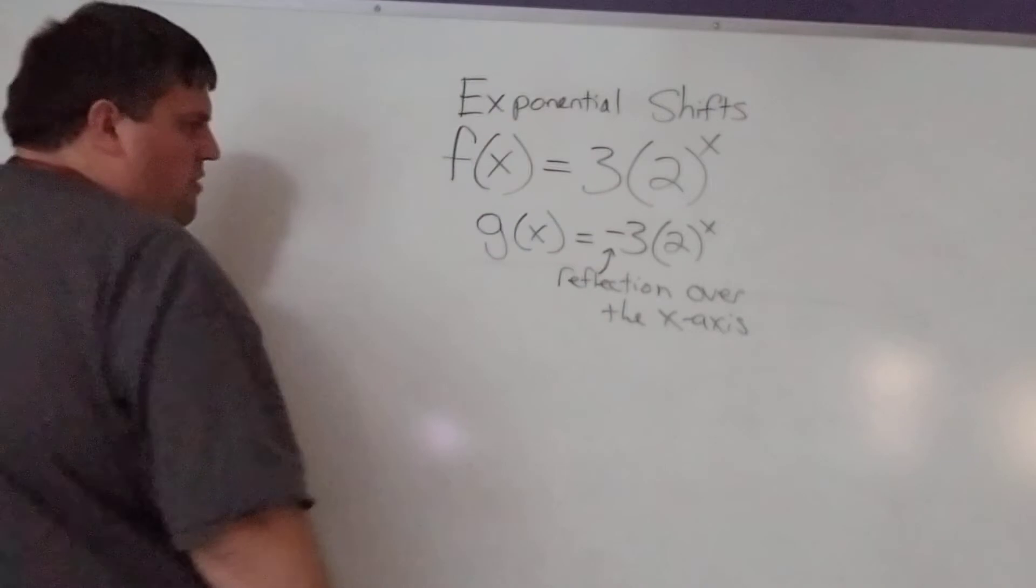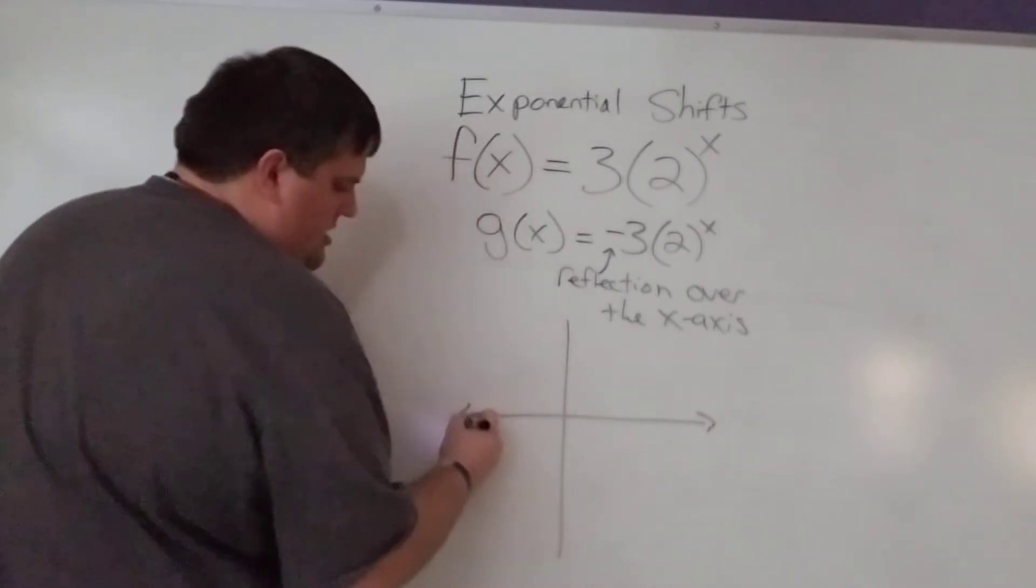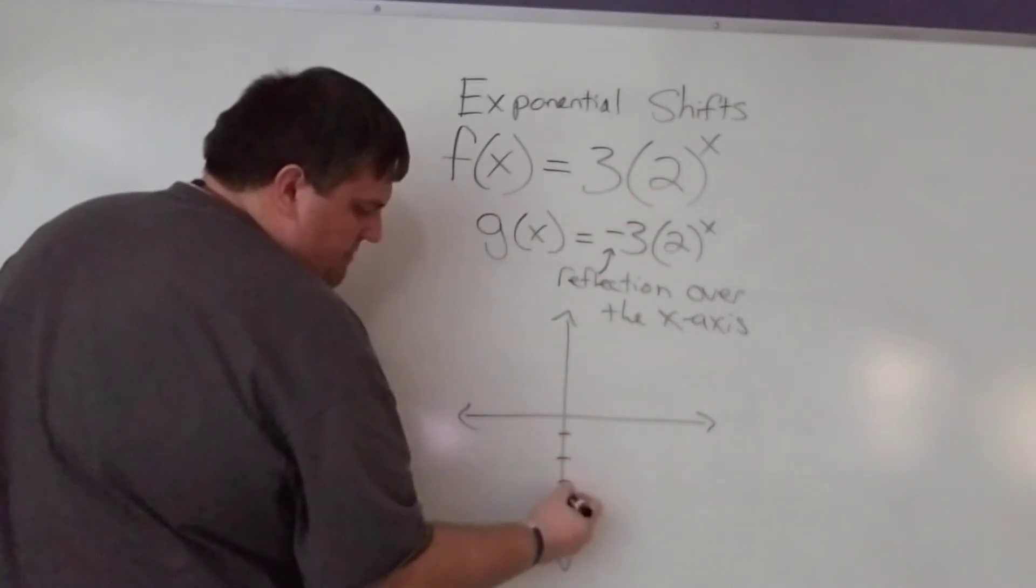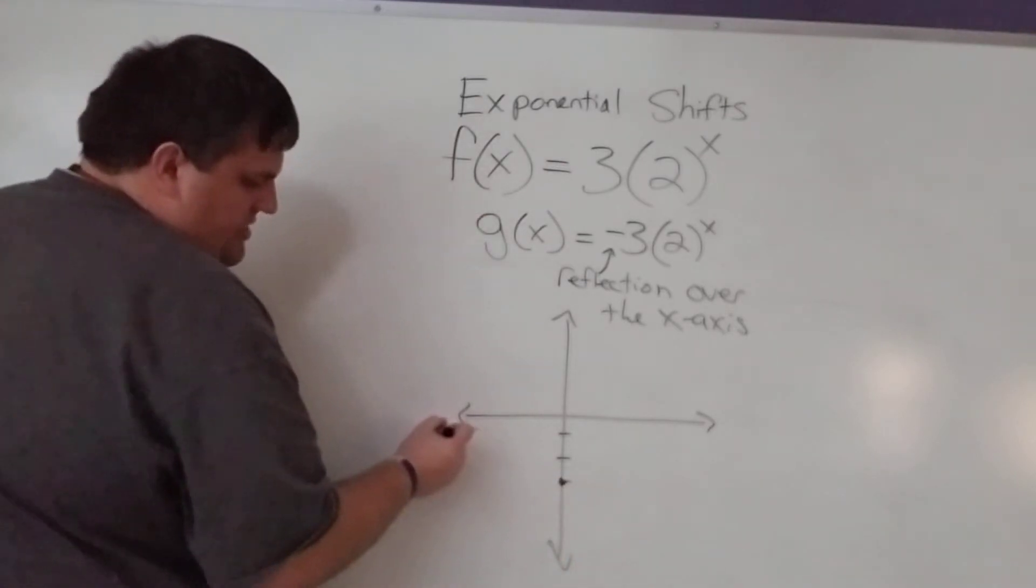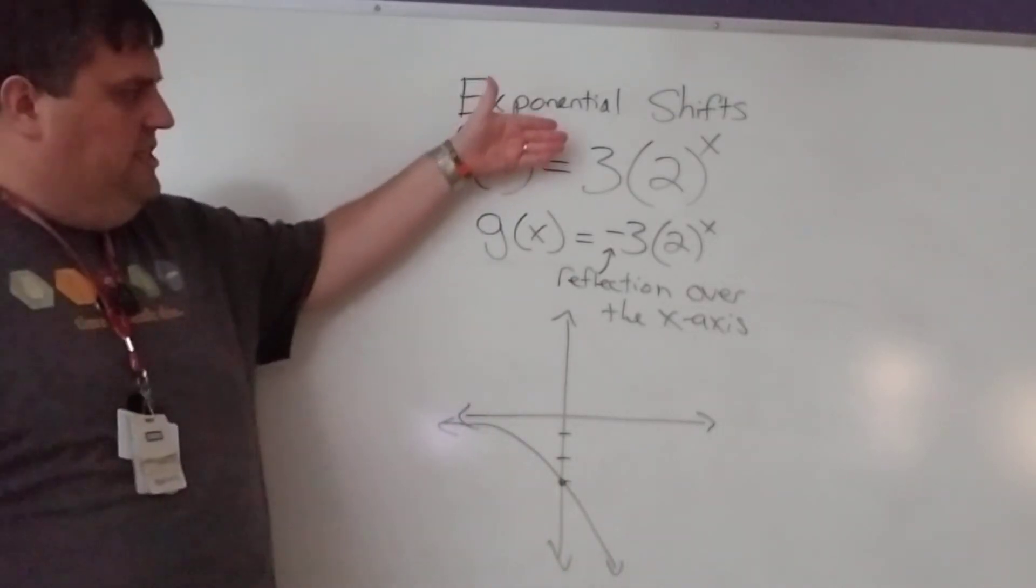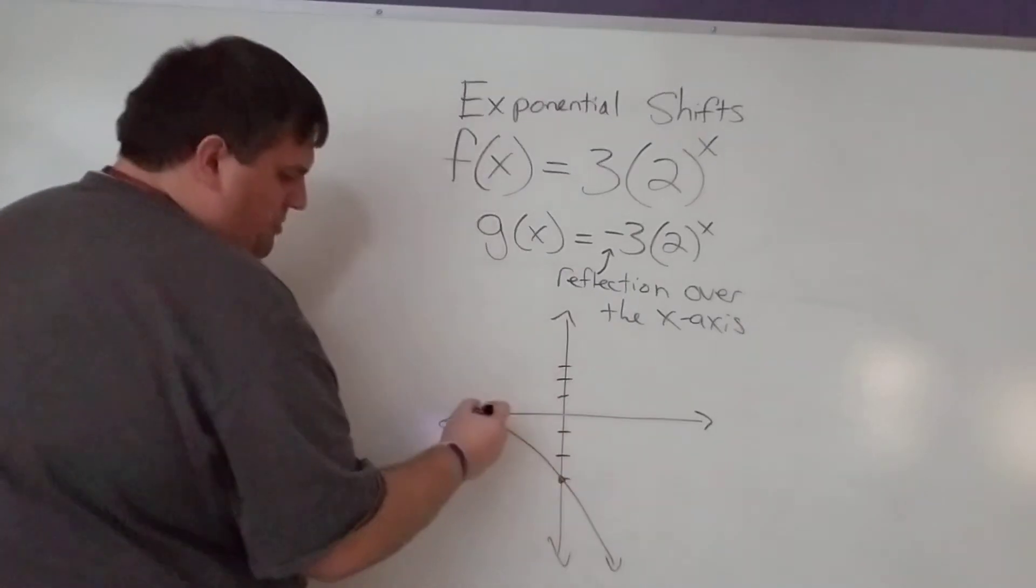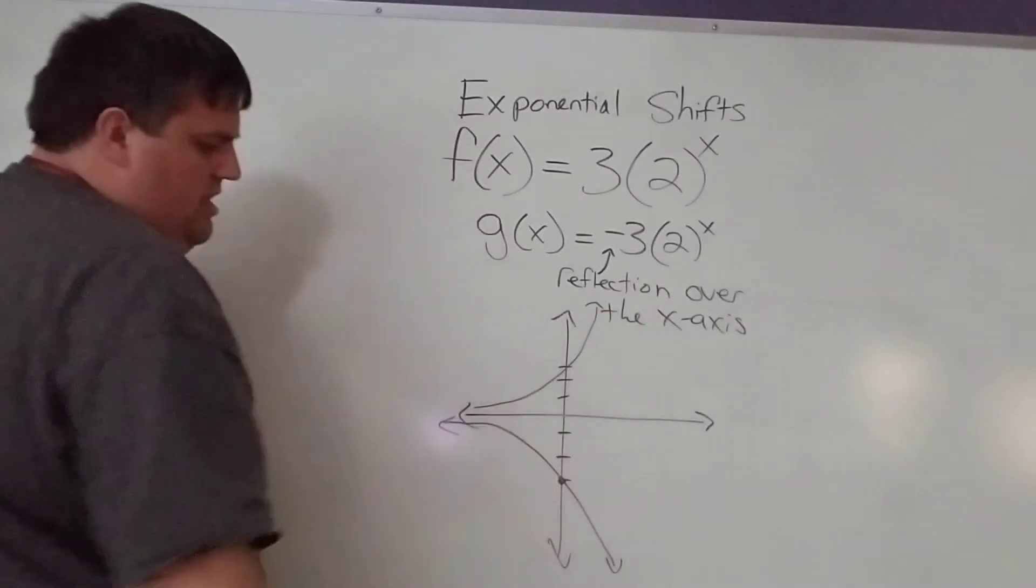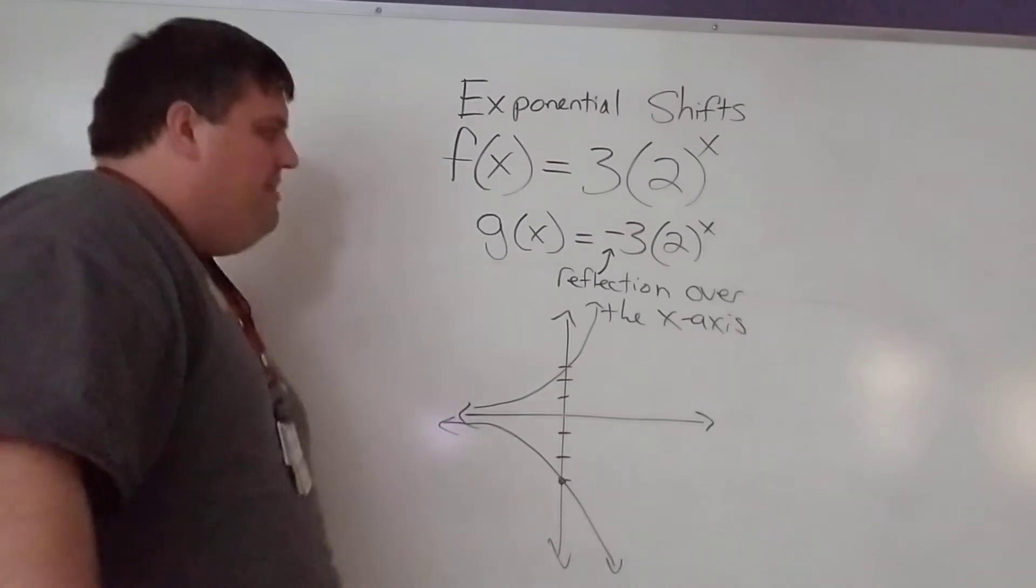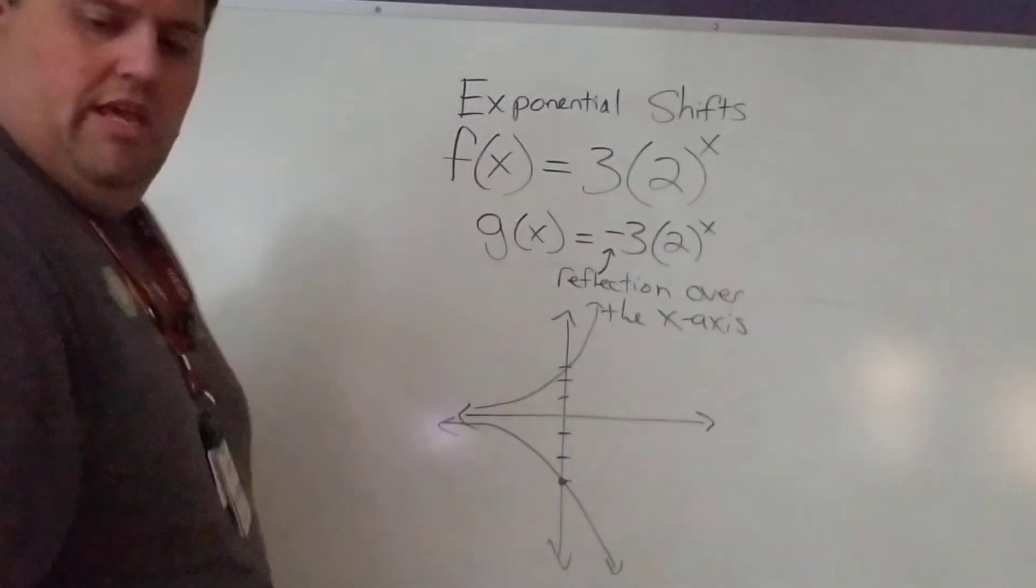So, that negative, if we see a negative in front of that coefficient there, that's just going to take our graph, and so this y-intercept here was 3 in the original function, down here in g of x, it's going to be negative 3. So it's going to look like this and do that. That's what this shift, or this negative here is going to do.